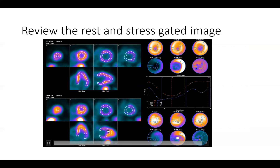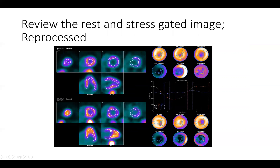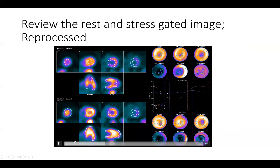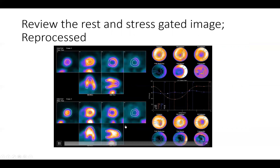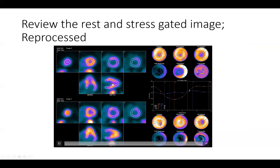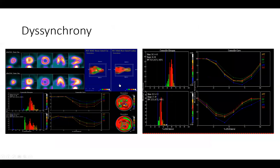Whenever you end up with this situation you try as much as you can to correct it, but even with our best efforts here we tried to correct it and you can see it actually made it worse — the tracking is even worse and the ejection fraction is now 17%. Of course we're not going to report this. So we ignore the rest images because of our inability to track the walls and we will only report the stress images, where you can see this left ventricular apical hypokinesia or dyskinesia.